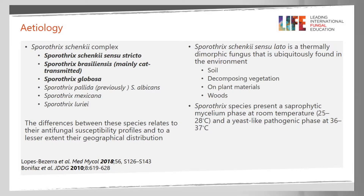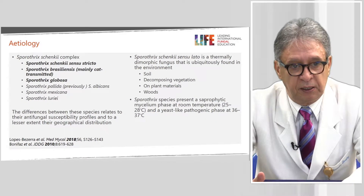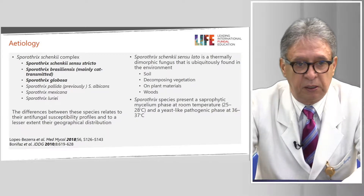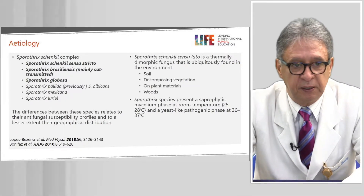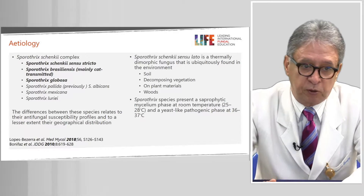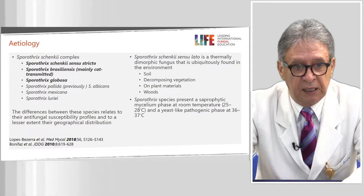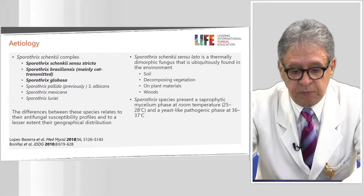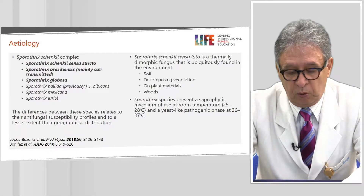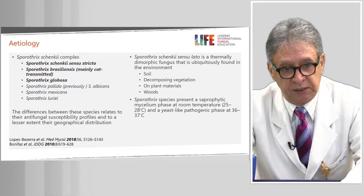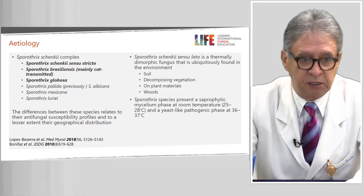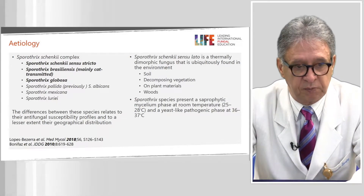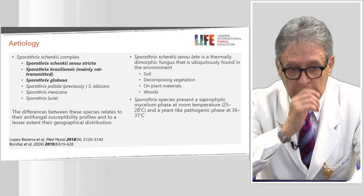Regarding etiology, we have a complex composed of several species. There are three major ones. Sporothrix schenckii sensu stricto is the most important and most frequent. Sporothrix brasiliensis is located in Brazil and is mainly cat-transmitted. And Sporothrix globosa. Three minor species with fewer cases are Sporothrix pallida, Sporothrix mexicana, and Sporothrix luriei.